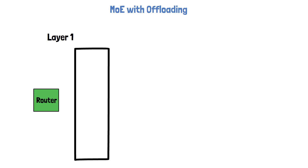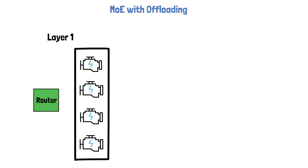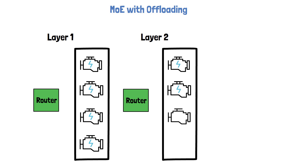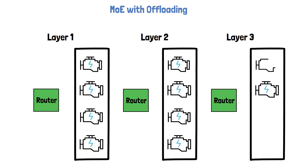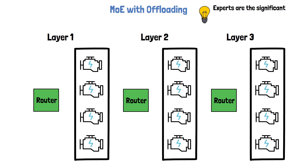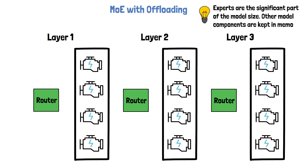Let's now add more layers to the model and discuss how offloading can help to improve inference efficiency when there is limited memory. In the following drawing we have 3 layers, each with a Router and 4 experts, and each layer has its own weights. Note that this drawing is simplified to explain the offloading part. In limited-memory hardware, we cannot load the entire model into GPU memory. The expert weights account for the majority of the model's size, but we can keep other parts of the model constant in the GPU, such as the routers and self-attention blocks.